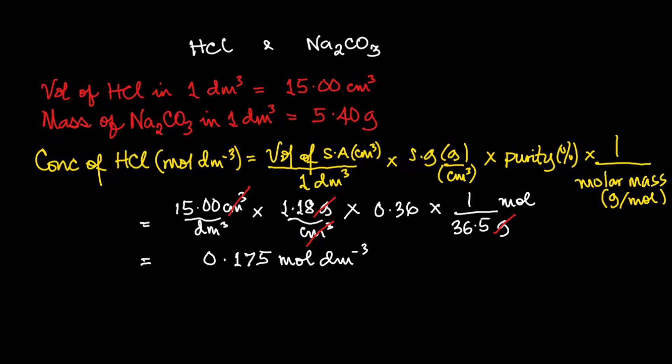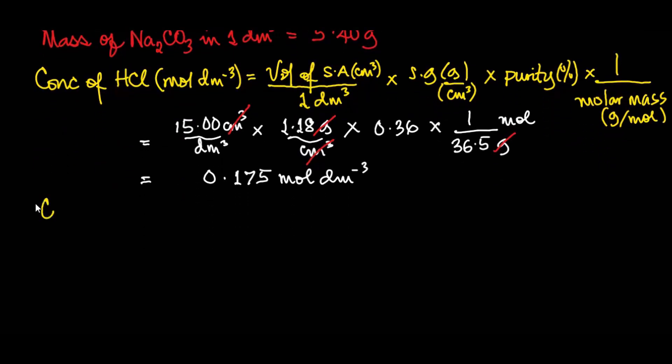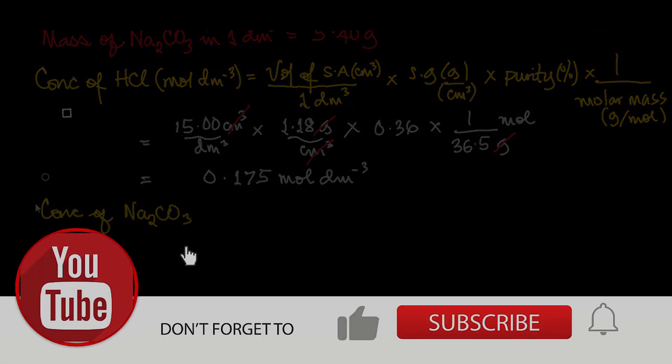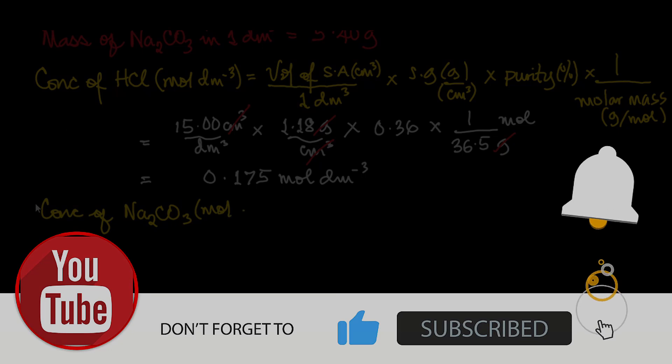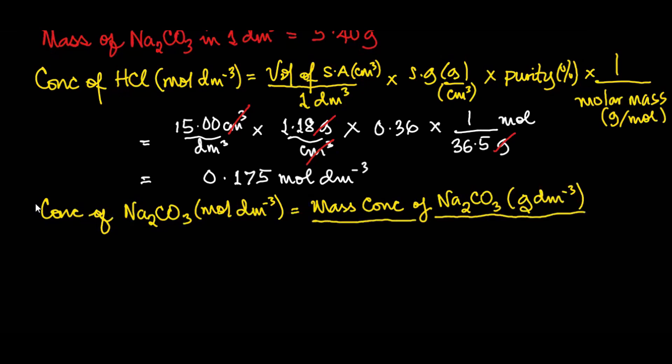So we move on to the concentration of the base, that's concentration of Na2CO3 in mol/dm³. To get that, we'll say concentration of Na2CO3 in mol/dm³ will be calculated as mass concentration of Na2CO3 in g/dm³ divided by the molar mass.